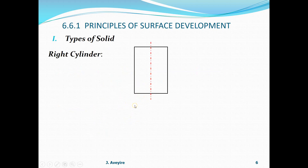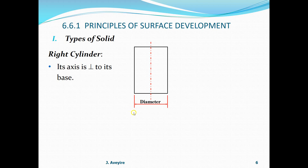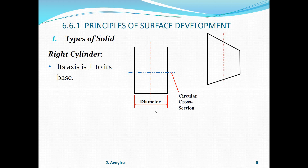Right cylinder - its axis is perpendicular to its base. Here we have a drawing showing the elevation. The base or lower opening gives us the diameter and its axis is perpendicular to that. It is a right prism. The cross section cut through that portion is circular in nature. The second view shows a cut portion of the same right cylinder this time.